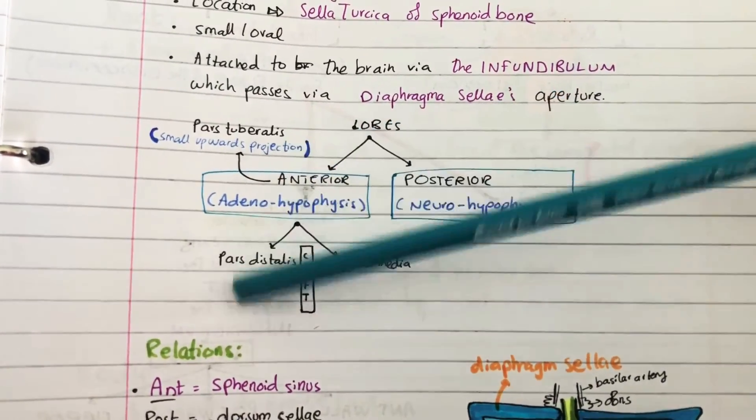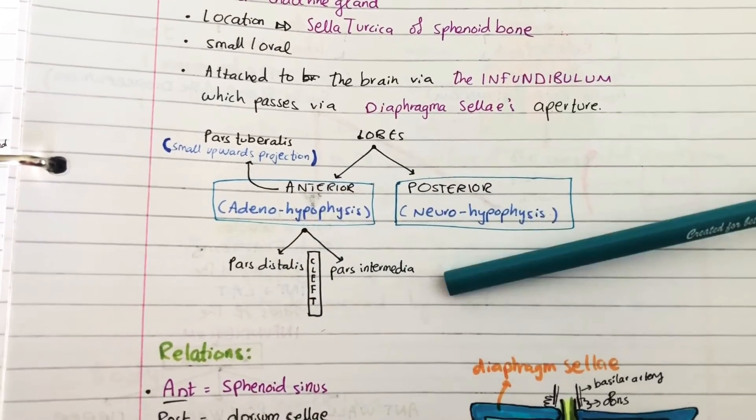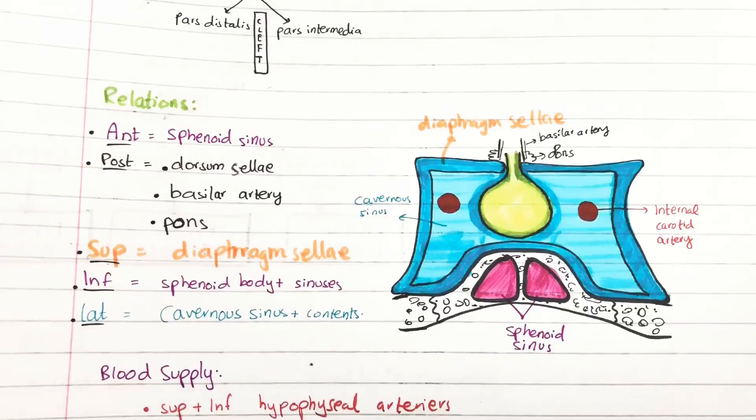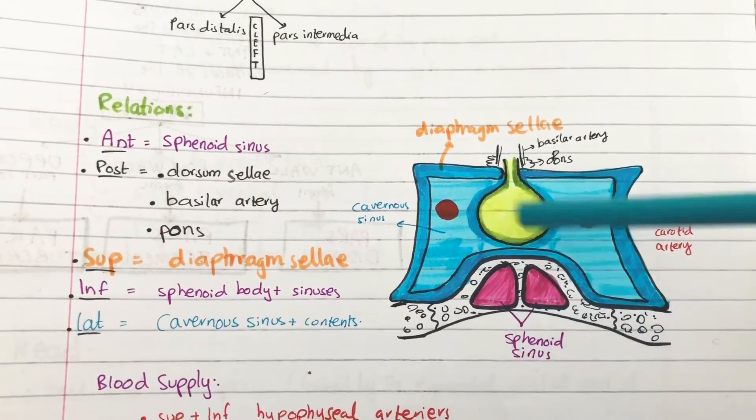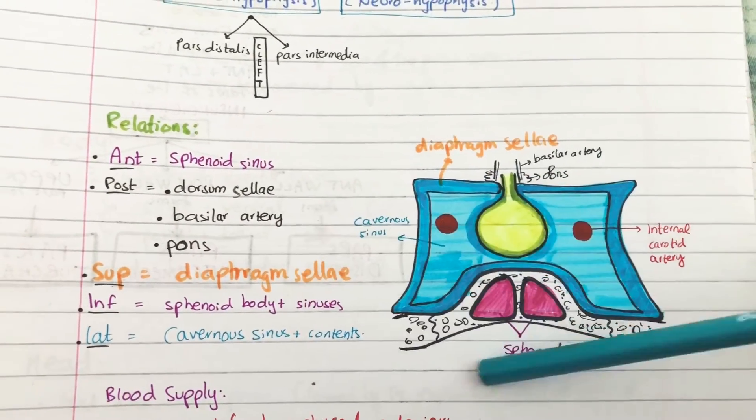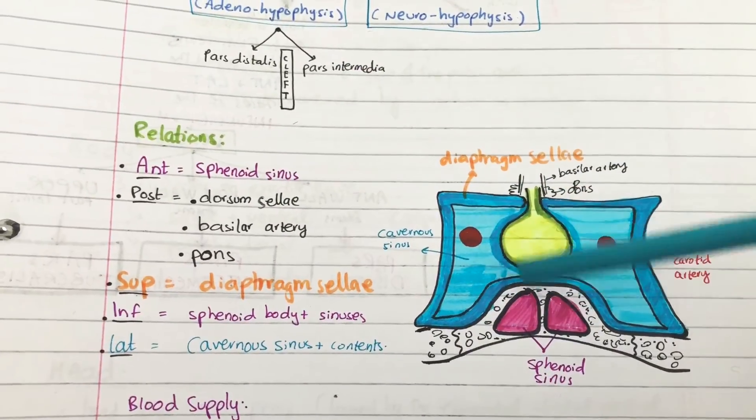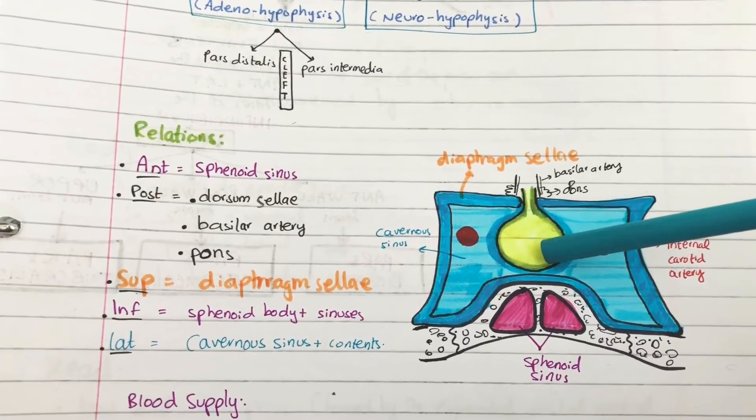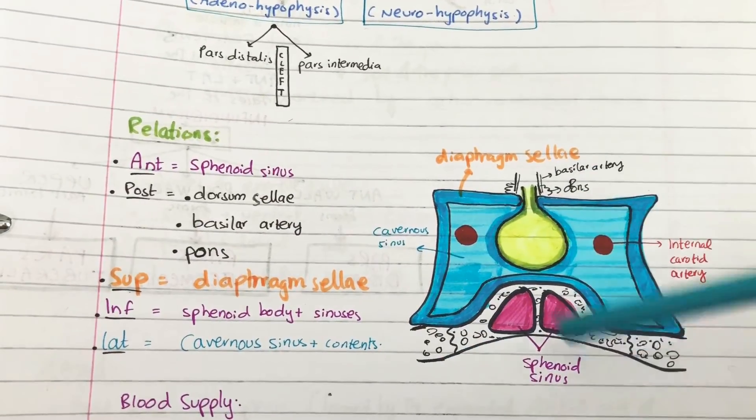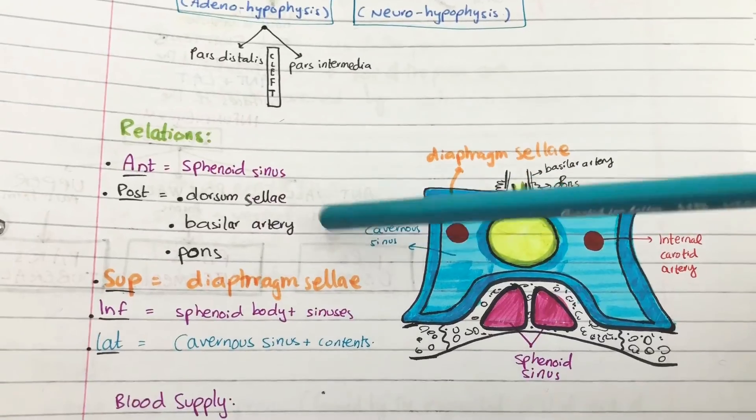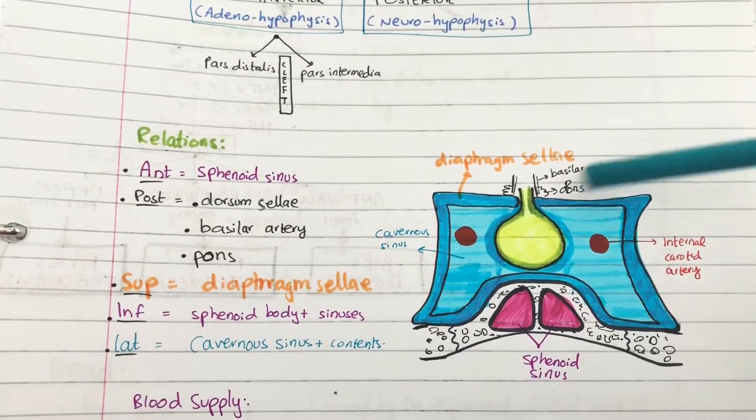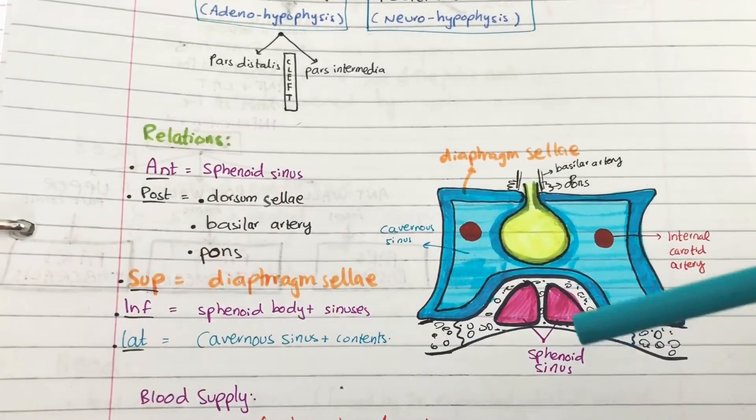Now this diagram looks a bit scary but it's really just the relation of the pituitary gland to the other structures. So just match the colors and this will be easier to understand. The pituitary gland is this big green yellow thing. Anteriorly there is the sphenoid sinus, posteriorly in the black bits there's the dorsum sellae, the basilar artery, and the pons. Superiorly there's the diaphragma sellae and inferiorly there is the sphenoid body and sinuses. Laterally there's the cavernous sinus and its contents.